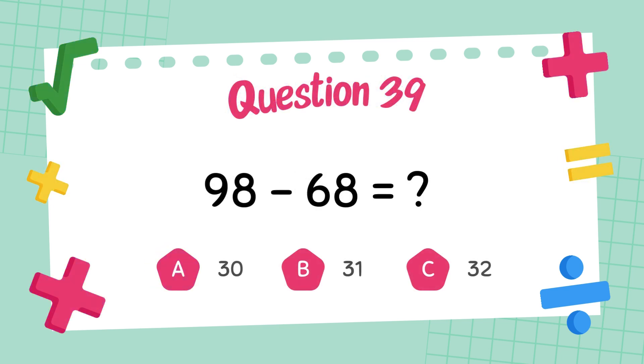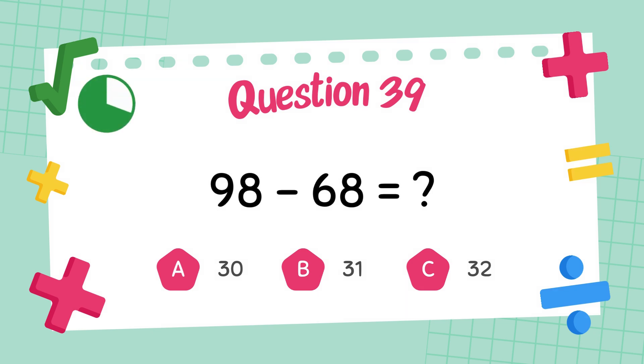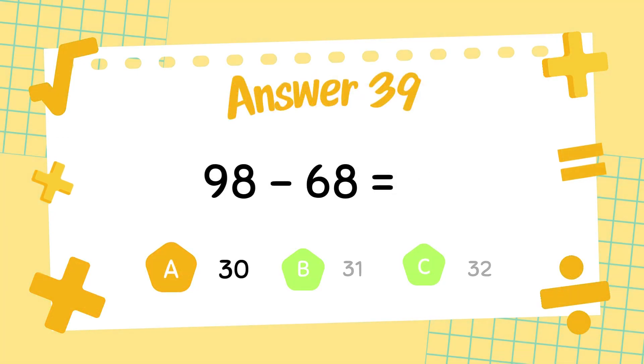What is ninety-eight minus sixty-eight? The answer is thirty.